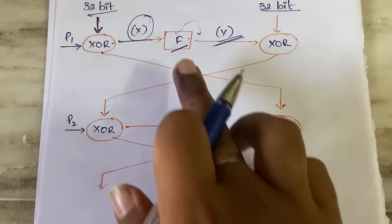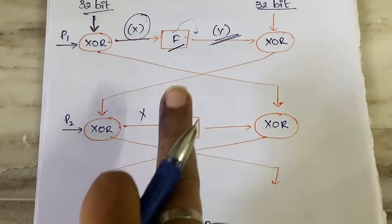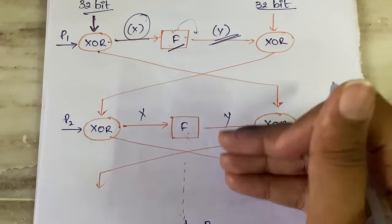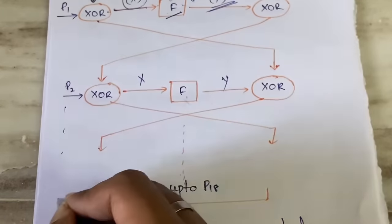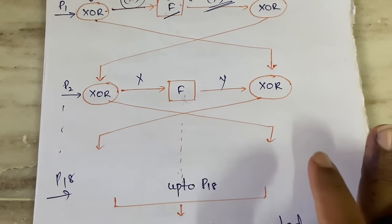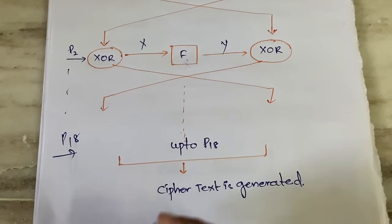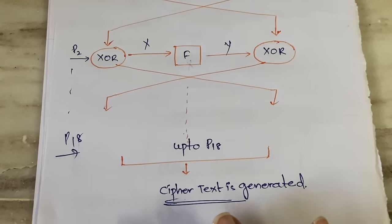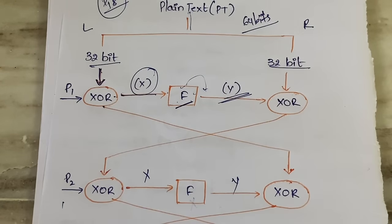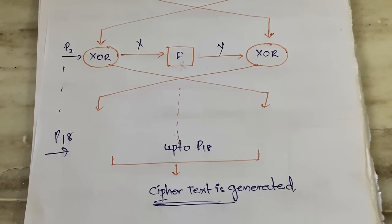The same process then repeats with P2: the output x goes into F, producing y, which is XOR'd with the 32-bit input on the other side. This continues up to P18, since we have 18 P values. After each round the two 32-bit results are swapped — left to right and right to left. After 18 rounds, the final left half and right half are merged together to produce the 64-bit cipher text.